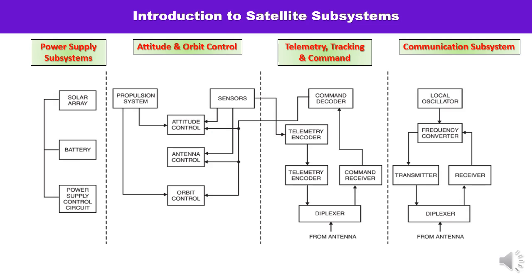Solar cells are photovoltaic cells that convert solar radiation into electricity, which is converted to the required voltage level. The conversion efficiency of a typical solar cell is about 12% to 15%, and typical satellite solar cells generate approximately 1 to 2 kilowatts of power.